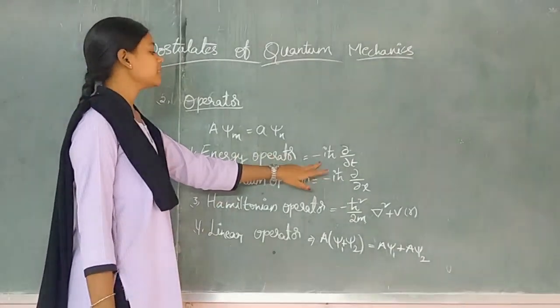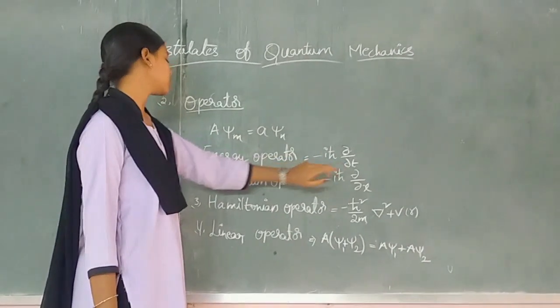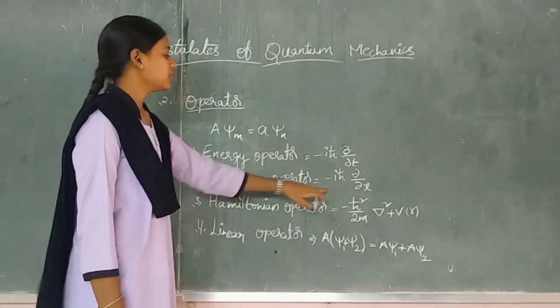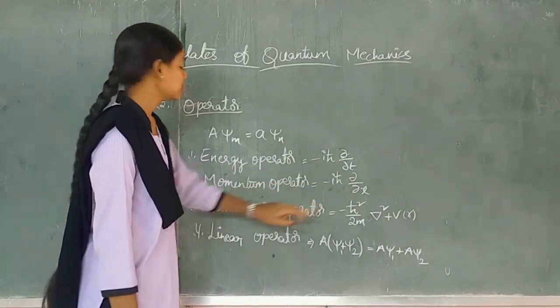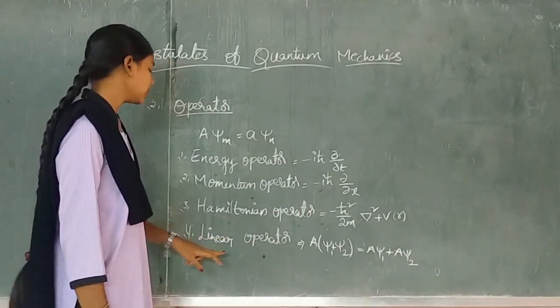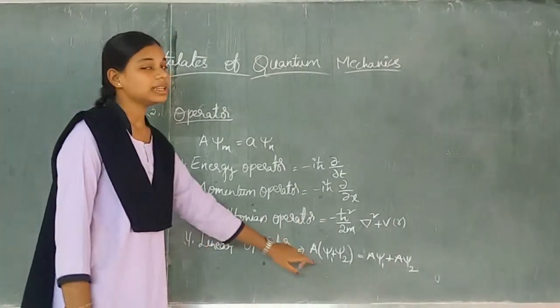LHU operator, minus IH cross del by del x. Momentum operator, minus IH cross del by del x. Hamiltonian operator, linear operator. Linear operator.